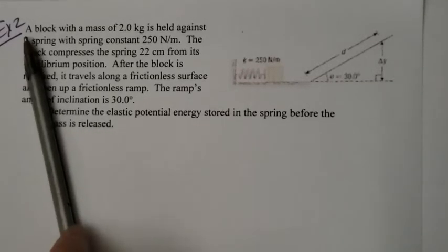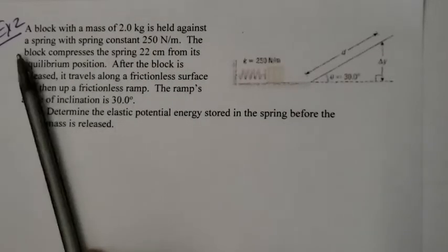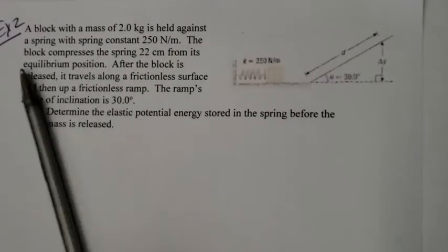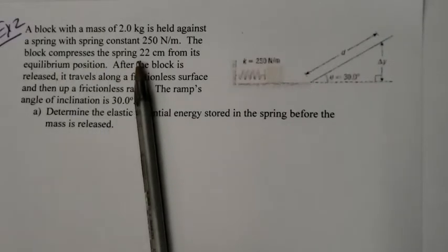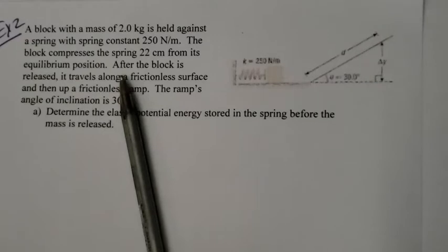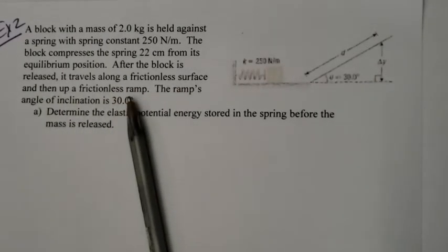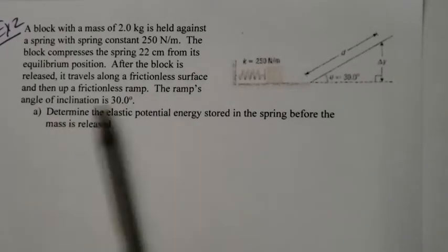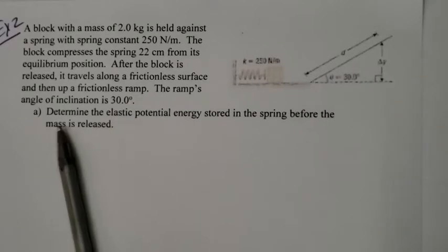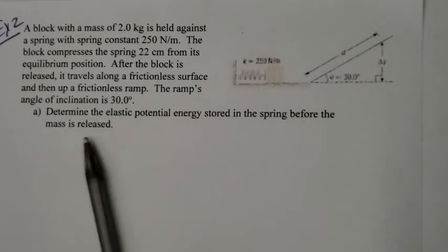Example number two: a block with a mass of 2 kilograms is held against a spring with a spring constant of 250 newtons per meter. The block compresses the spring 22 centimeters from its equilibrium position. After the block is released, it travels along a frictionless surface, then up a frictionless ramp. The ramp's angle of inclination is 30 degrees. Determine the elastic potential energy stored in the spring before the mass is released.